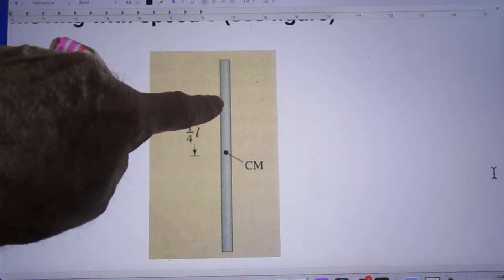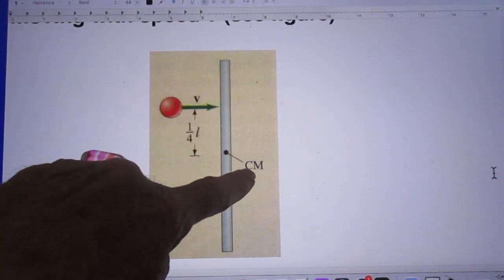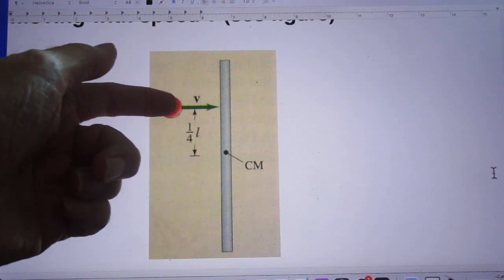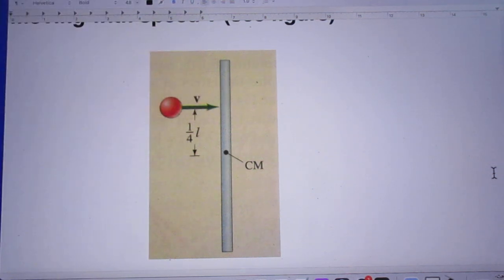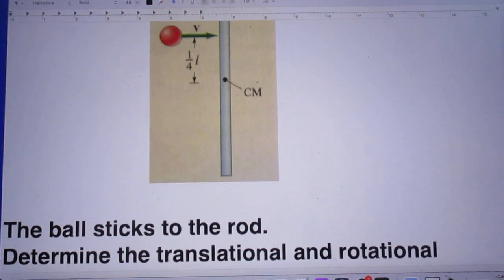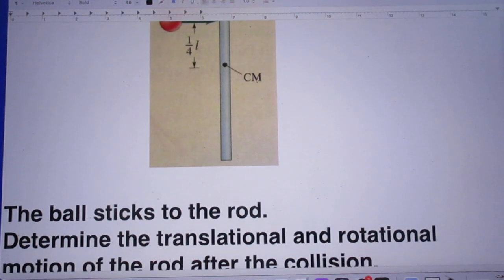So, one quarter L from the center of mass. Here comes the clay, speed v. The ball sticks to the rod.